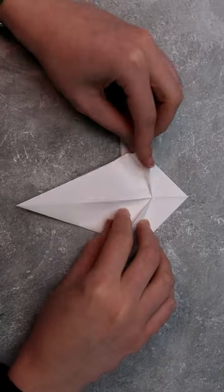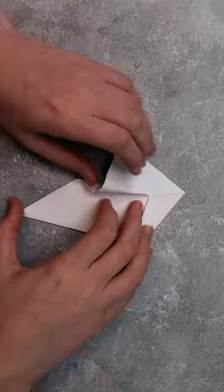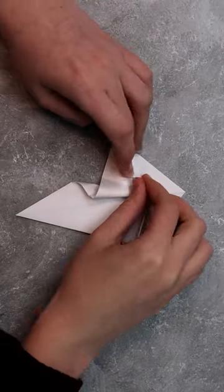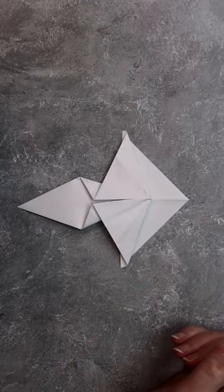Now we're going to unfold that section and squish the paper in to meet the middle line like this. Not the easiest to explain but hopefully you can just see what I'm doing in the video and copy that. Then go ahead and repeat that on the other side.